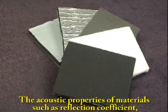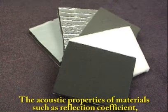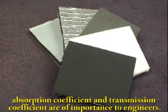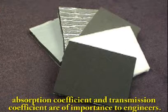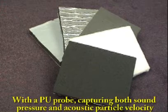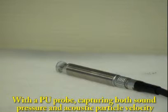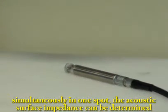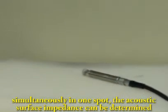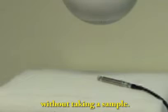The acoustic properties of materials such as reflection coefficient, absorption coefficient and transmission coefficient are of importance to engineers. With a PU probe capturing both sound pressure and acoustic particle velocity simultaneously in one spot, the acoustic surface impedance can be determined without taking a sample.